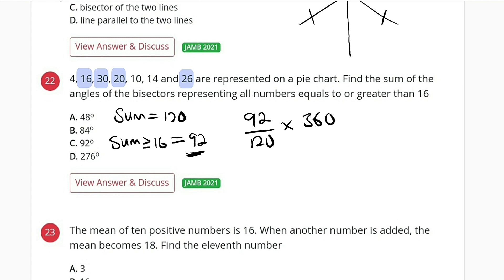So we say 92 divided by 120, whatever we have we multiply by 360, and that will give us the sum of 276.